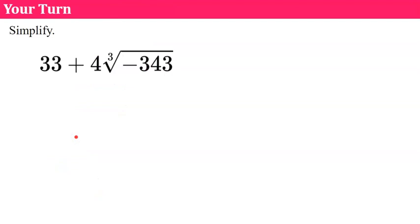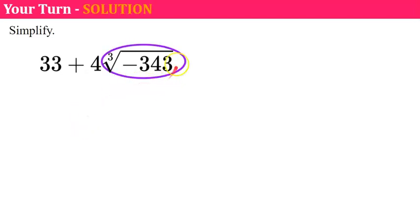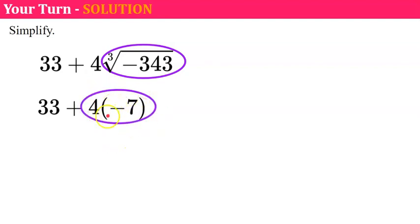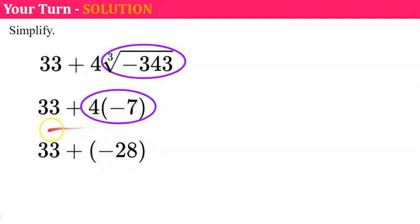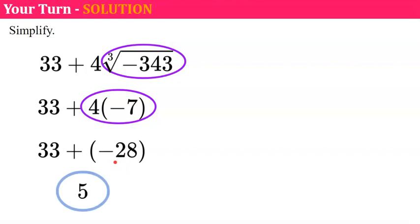Now it's your turn — simplify this expression. Pause and come back when you're ready. Welcome back. The first thing we do is clear the cube root, which is negative 7. Then we multiply: 4 times negative 7 is negative 28. Last, we add: 33 and negative 28 gives positive 5.